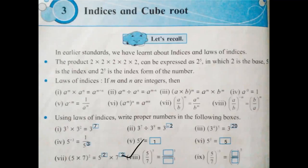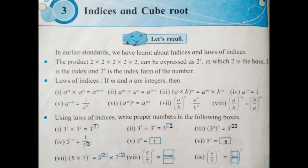Next: 5 upon 7 in bracket raised to 3 is equal to box raised to 3 upon box raised to 3. The formula is A upon B in bracket raised to M is equal to A raised to M upon B raised to M. According to this formula, the correct numbers in the boxes are: 5 upon 7 in bracket raised to 3 means 5 raised to 3 upon 7 raised to 3.